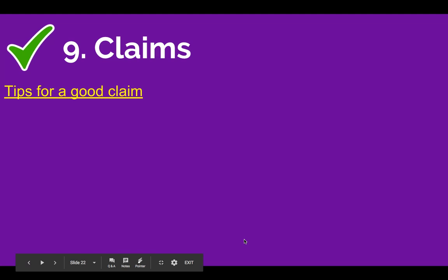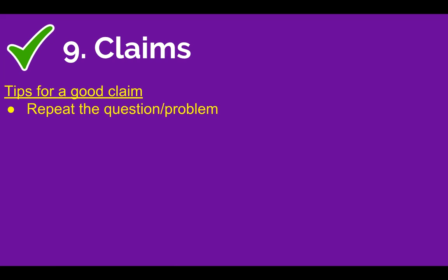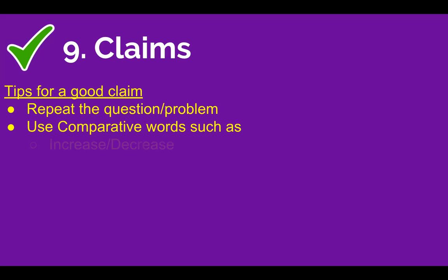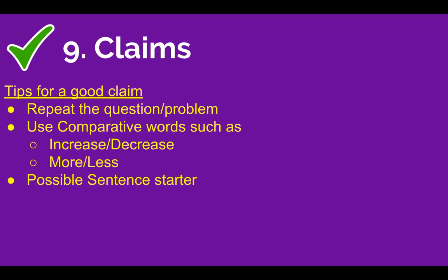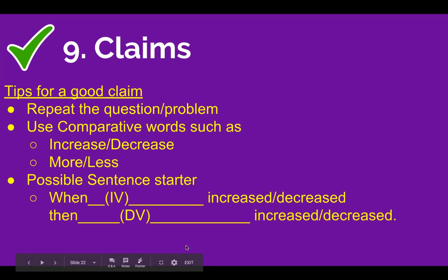Here are some tips on writing a claim. Tip number one: repeat the question or problem but write it as a statement or sentence instead of copying the question. Use comparative words such as increase and decrease, more or less. Some possible sentence starters could include: 'When the IV increased/decreased, then the DV increased/decreased.'